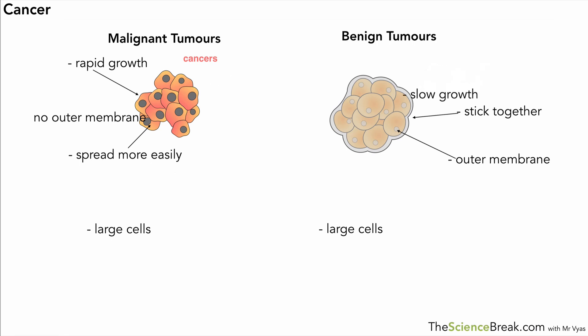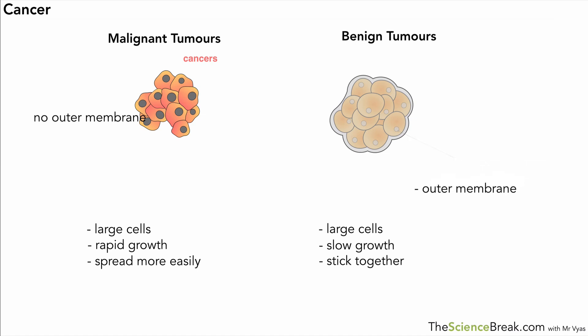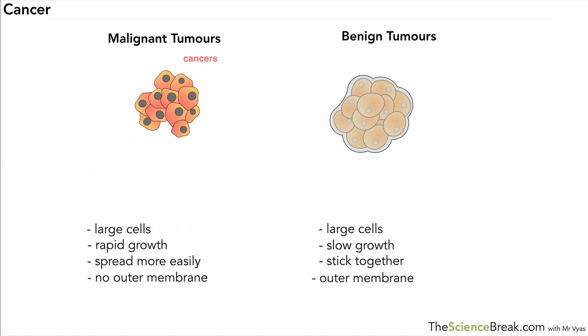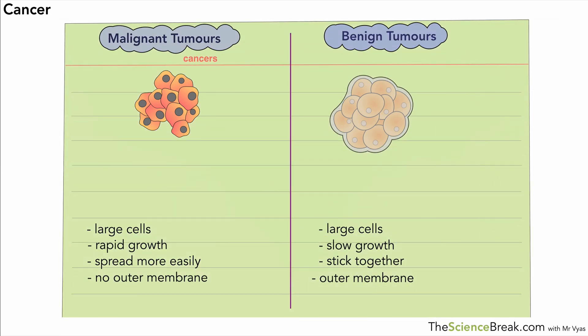Now might be a good time to get out your revision cards — you can summarise all of this quite neatly onto one of them; a good A5-size one will probably do the trick. There's a revision card — a summary of the cell cycle and cancer. I just forgot to add the detail about the formation of secondary tumours, so I've added it on the left-hand side. That's about all. Thank you for watching and I'll see you again in the next one.